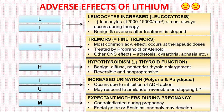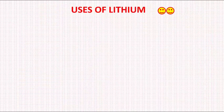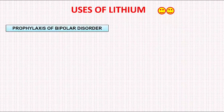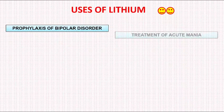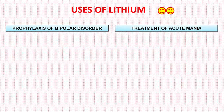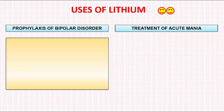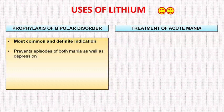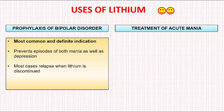We now move on to the uses of Lithium. Lithium is mainly used in two conditions: one, prophylaxis of bipolar disorder, and two, treatment of acute mania. The first — prophylaxis of bipolar disorder — is the most common and definite indication of Lithium. Lithium prevents episodes of both mania as well as depression in bipolar disorder. However, most cases relapse when Lithium is discontinued.